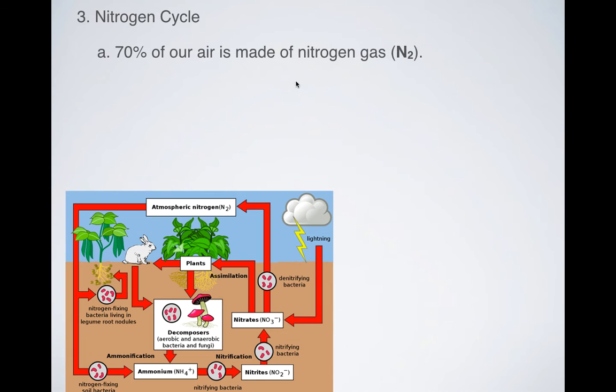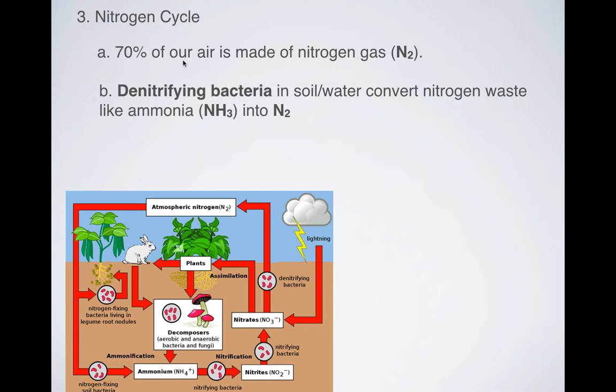Now what about the nitrogen cycle? So the nitrogen cycle, 70% of our air is made up of nitrogen. Most of it's not oxygen, it's mostly nitrogen. Where did that nitrogen come from? Well, for the most part, we have bacteria called denitrifying bacteria that we find in the soil and in the water that turns nitrogen waste like ammonia, which is NH3, into nitrogen gas, which is in our atmosphere.